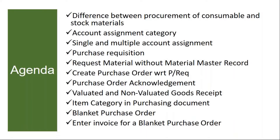The topics we are going to cover here: you will see the difference between procurement of consumable and stock materials, what is account assignment category and its importance, how to assign single and multiple account assignments in the purchase requisition or purchase order, then we will create a purchase requisition, how to create a purchase requisition or purchase order without a material master record, how to create a purchase order with respect to purchase requisition, purchase order acknowledgement, valuated and non-valuated goods, item category in the purchasing document, and how to create a blanket purchase order and entering an invoice for a blanket.